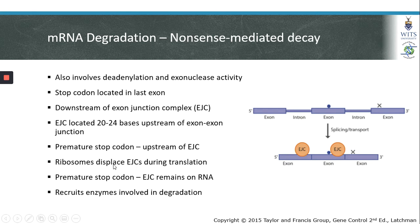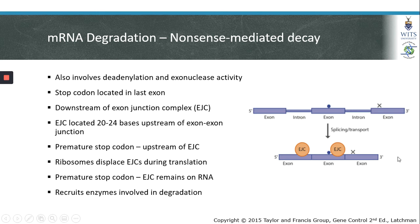During translation, ribosomes play a role by displacing these exon junction complexes. In the event of a premature stop codon being present on the mRNA transcript, the last exon junction complex will not dissociate from the mRNA strand and will therefore remain associated with it. If translation terminates prematurely, the exon junction complex that remains on the mRNA can recruit enzymes involved in degradation of the mRNA containing the premature stop codon. This process is referred to as nonsense-mediated decay.